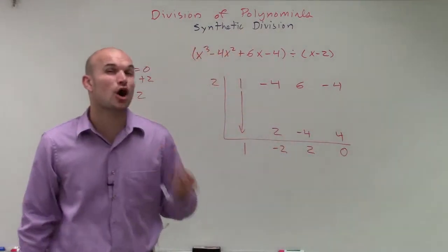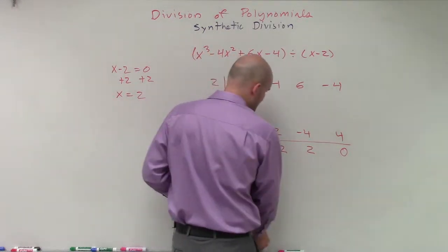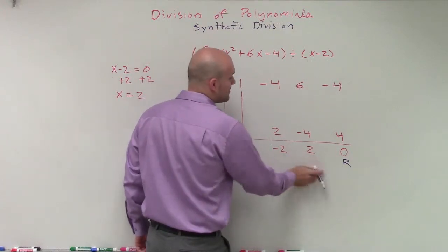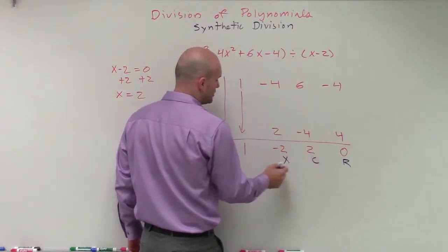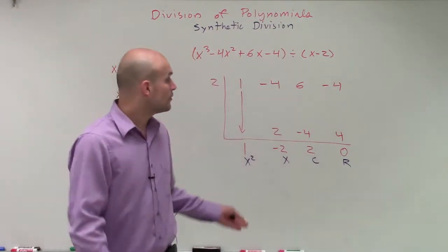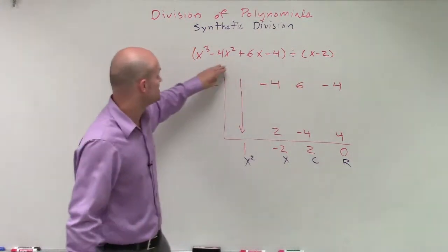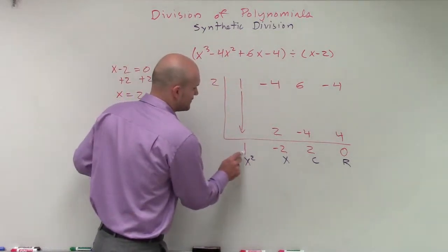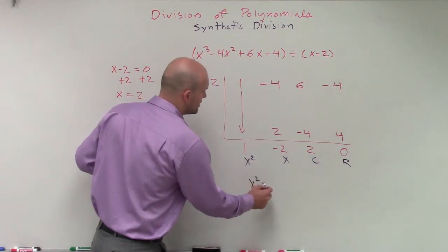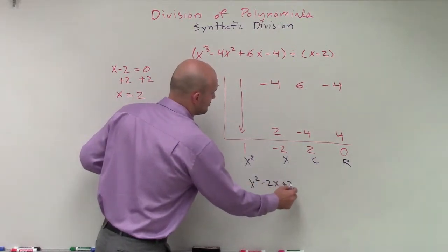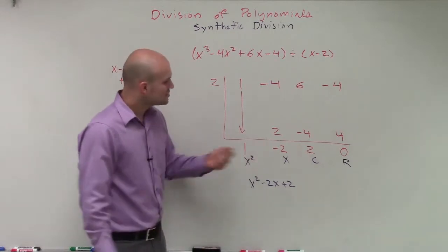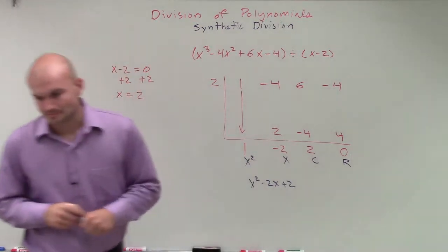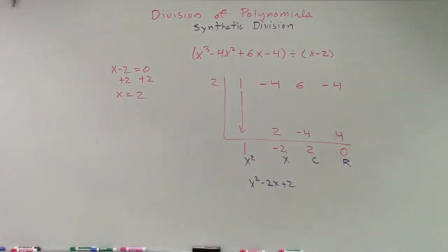Remember, our last term is always our remainder. So our remainder is 0. Then we have our constant, our linear, and our quadratic. Therefore, we can determine that x minus 2 divides into the polynomial x cubed minus 4x squared plus 6x minus 4. Since the leading coefficient is 1, it divides into there x squared minus 2x plus 2 times. That is going to be our quotient of our polynomial.